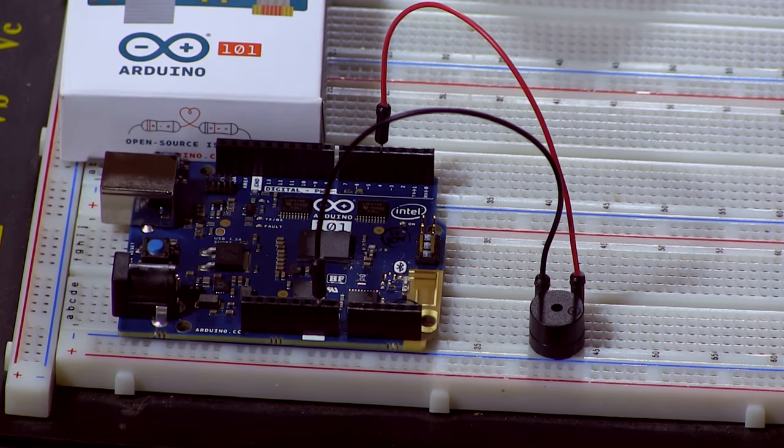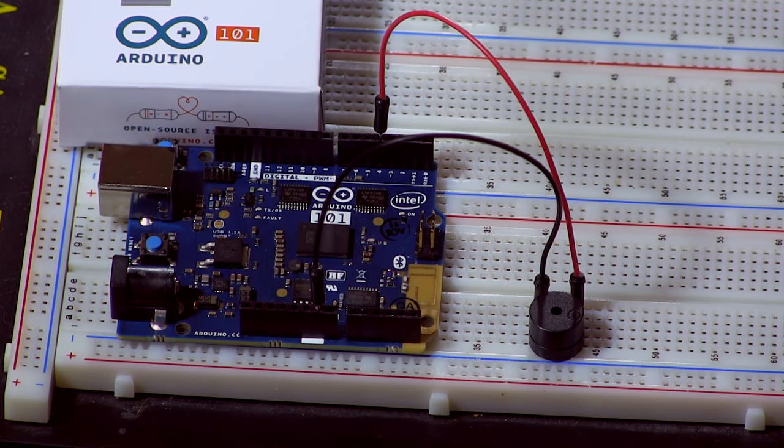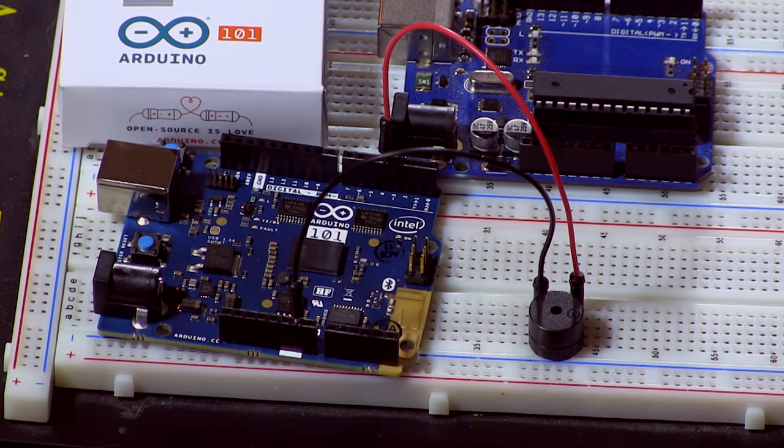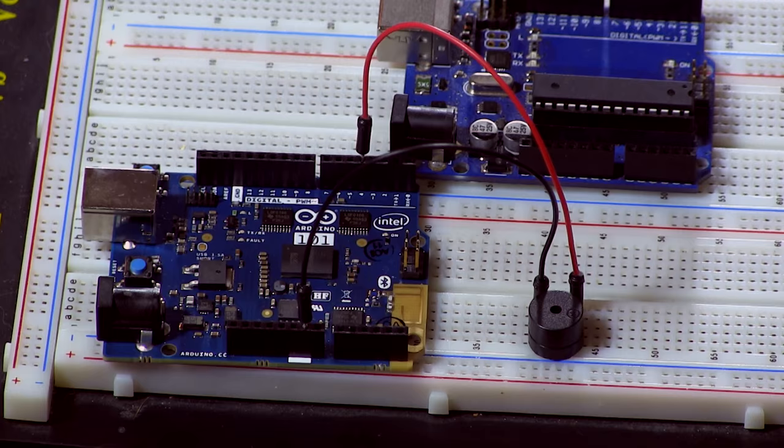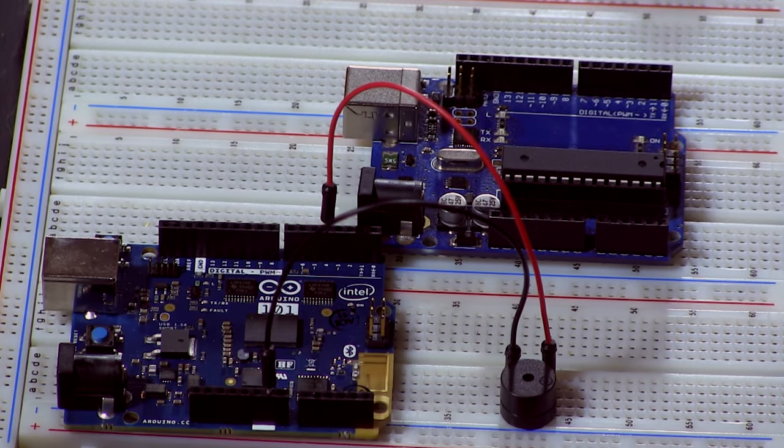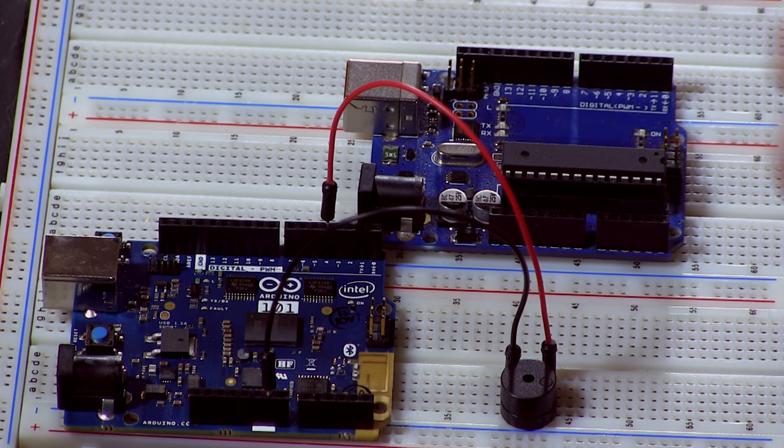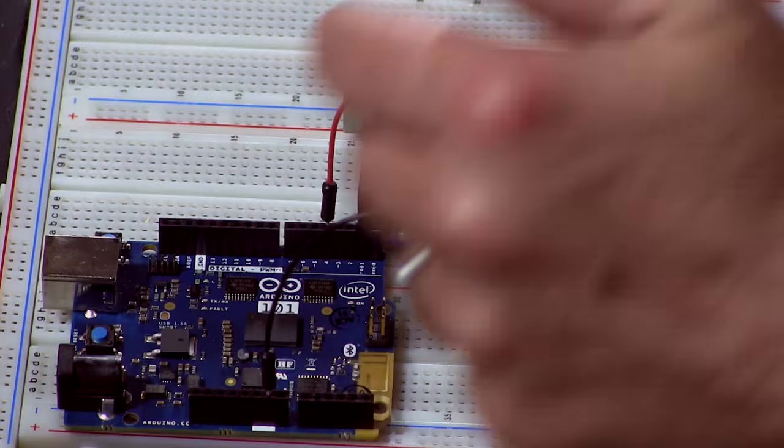So let's just look at the board real quick. The form factor of the board looks a lot like the Arduino Uno as you can see here. It's the same form factor pretty much. Let me just move this here, there we go. So as you can see the size is the same, the connections are in the same areas, the DC, the USB, the reset switch.